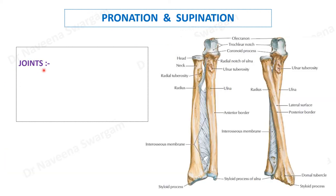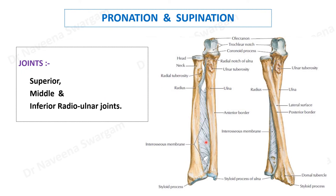The joints involved in pronation and supination movements are the superior, middle, and inferior radio-ulnar joints. The superior radio-ulnar joint is a pivot variety of synovial joint, where the disc-like head of the radius rotates within the annular ligament around a vertical axis. The middle radio-ulnar joint is a syndesmosis variety of fibrous joint, formed by the parallel fibrous bands of the interosseous membrane, which gets spiralized during pronation.